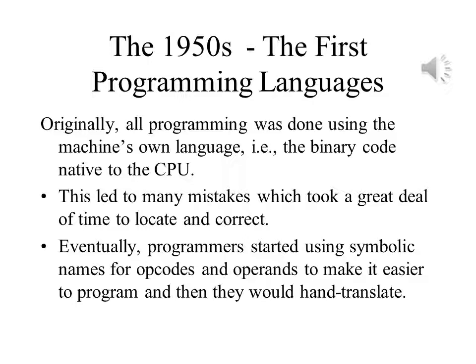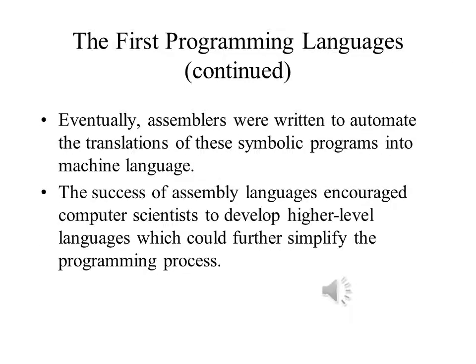This made it easier to write the programs. After they checked to make sure that the program would work correctly, they would simply hand translate it to machine language, and then it could be entered into the computer. Eventually, programmers discovered that the task was so mechanical that it could be automated fairly easily. That meant they could write programs that would do the translation for them. Since these programs assembled the translations, they were called assemblers, and the languages became known as assembly languages.